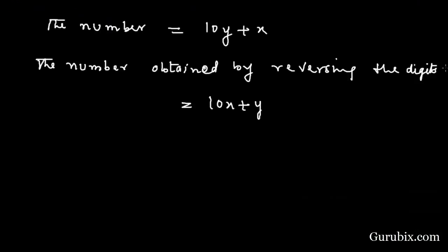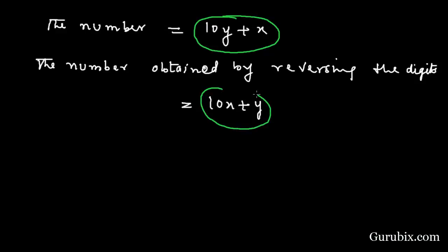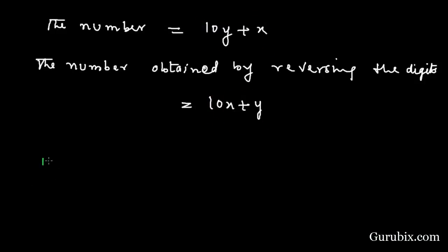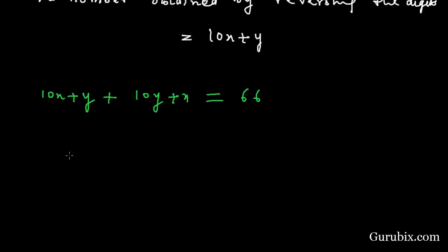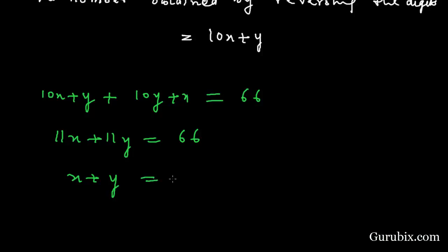We are told that the sum of the required number and the number obtained by reversing the digits is 66. So if we add 10X plus Y with 10Y plus X, we get 66. This means 11X plus 11Y equals 66, which simplifies to X plus Y equals 6. This is our equation number 1.